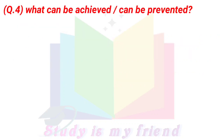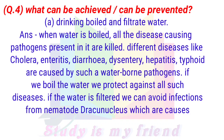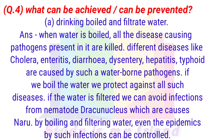Question 4: What can be achieved or prevented? A. Drinking boiled and filtered water. Answer: When water is boiled, all disease-causing pathogens present in it are killed. Different diseases like cholera, enteritis, diarrhea, dysentery, hepatitis, and typhoid are caused by such waterborne pathogens. If we boil the water, we are protected against all such diseases. If the water is filtered, we can avoid infections from nematode Dracunculus which causes Guinea worm disease.